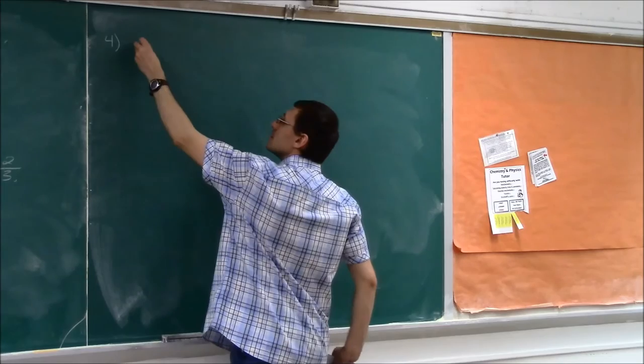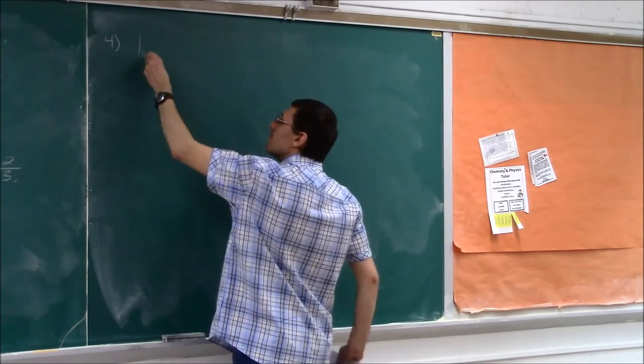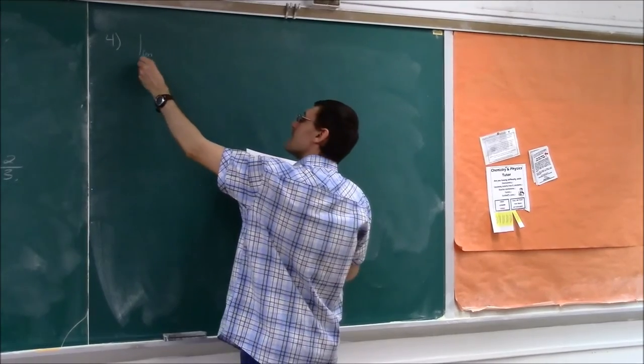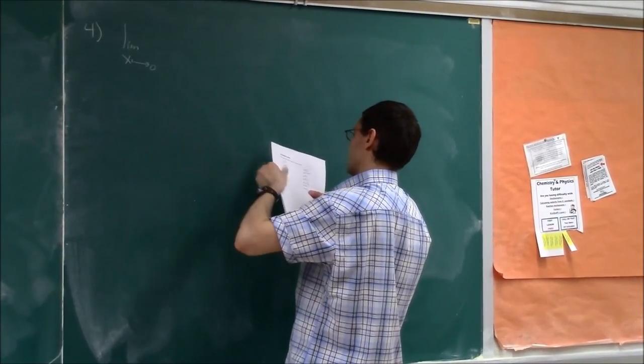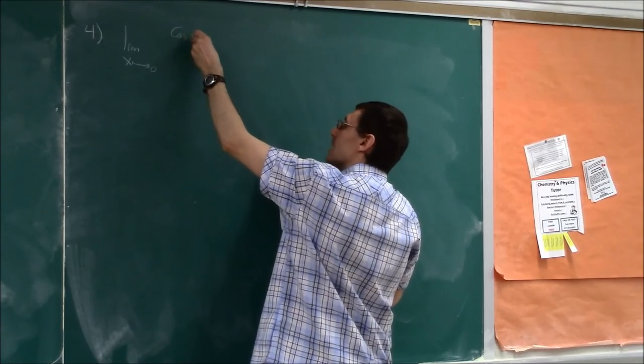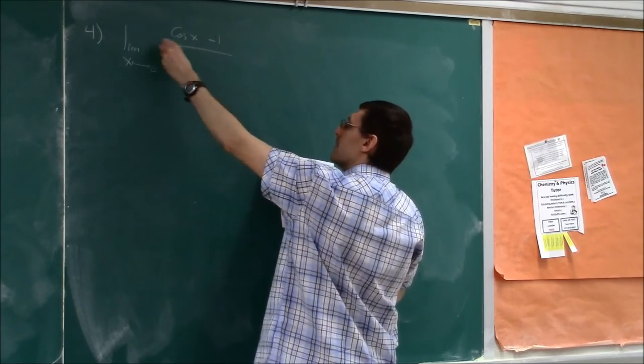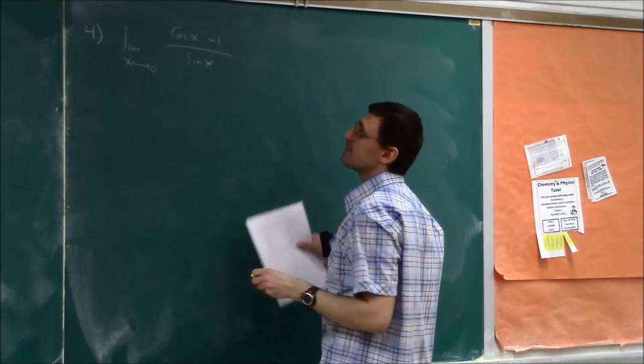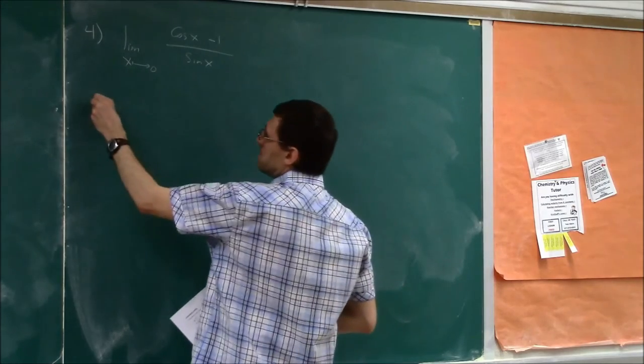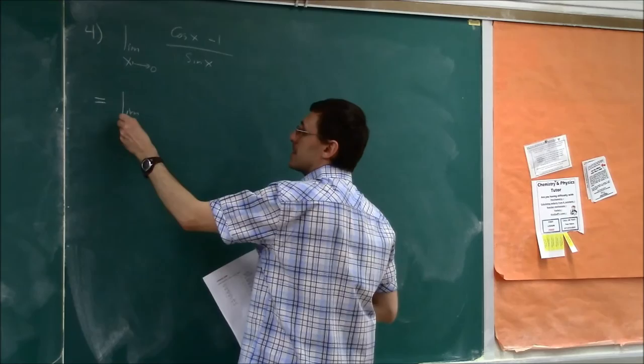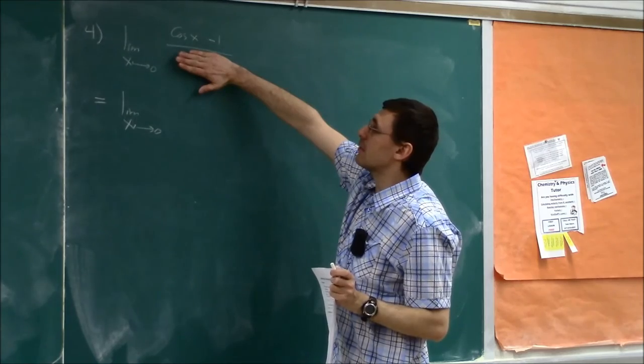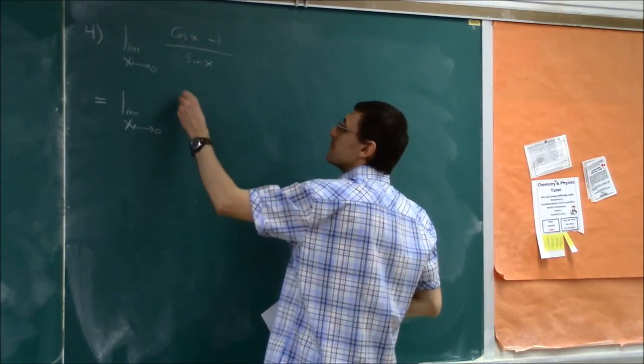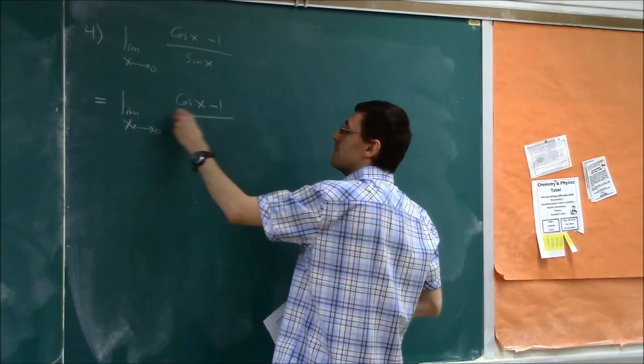Example 4. Let's calculate limit as x goes to 0 of cos(x) minus 1 divided by sin(x). This depends on our ability to recognize that this is limit as x goes to 0. Cosine of x minus 1 looks like the beginning of the derivative of cosine. So we would have liked to see here cos(x) minus 1 over x.